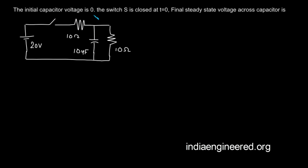The initial capacitor voltage is zero, meaning the capacitor voltage is zero. The switch S is closed at t equal to zero. Now the final steady state voltage across the capacitor, we just have to find out.